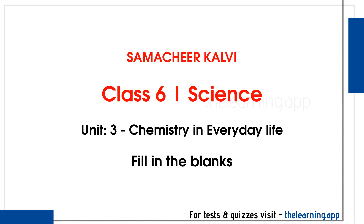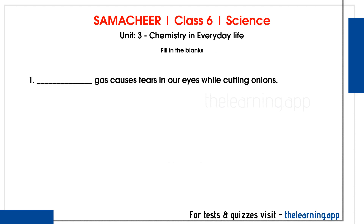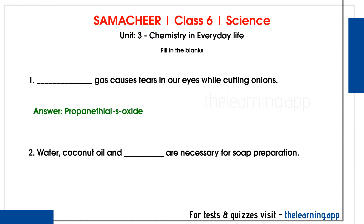Fill in the blanks. Question 1. Dash gas causes tears in our eyes while cutting onions. Correct answer is Propanethial oxide. Question 2. Water, coconut oil and dash are necessary for soap preparation. Correct answer is Animal fat.